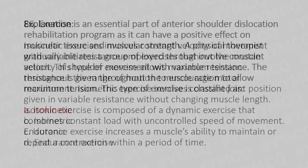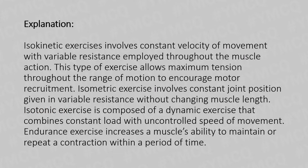Isokinetic exercises involve constant velocity of movement with variable resistance employed throughout the muscle action. This type of exercise allows maximum tension throughout the range of motion to encourage motor recruitment. Isometric exercise involves constant joint position with variable resistance without changing the muscle length. Isotonic exercise is composed of dynamic exercise that combines constant load with uncontrolled speed of movement. Endurance exercise increases a muscle's ability to maintain or repeat a contraction within a period of time.